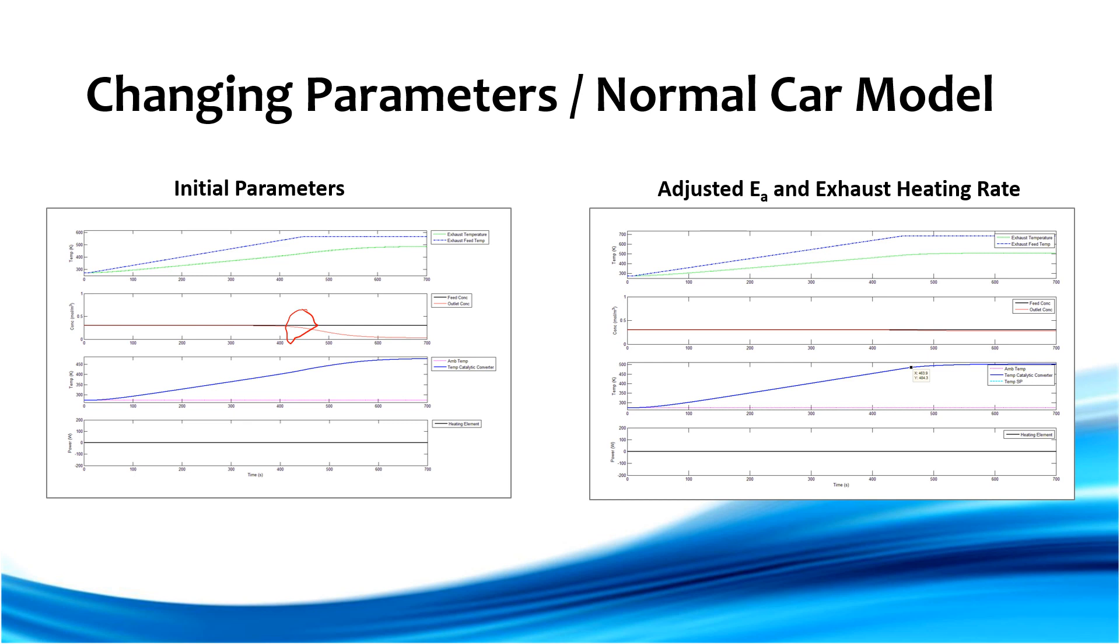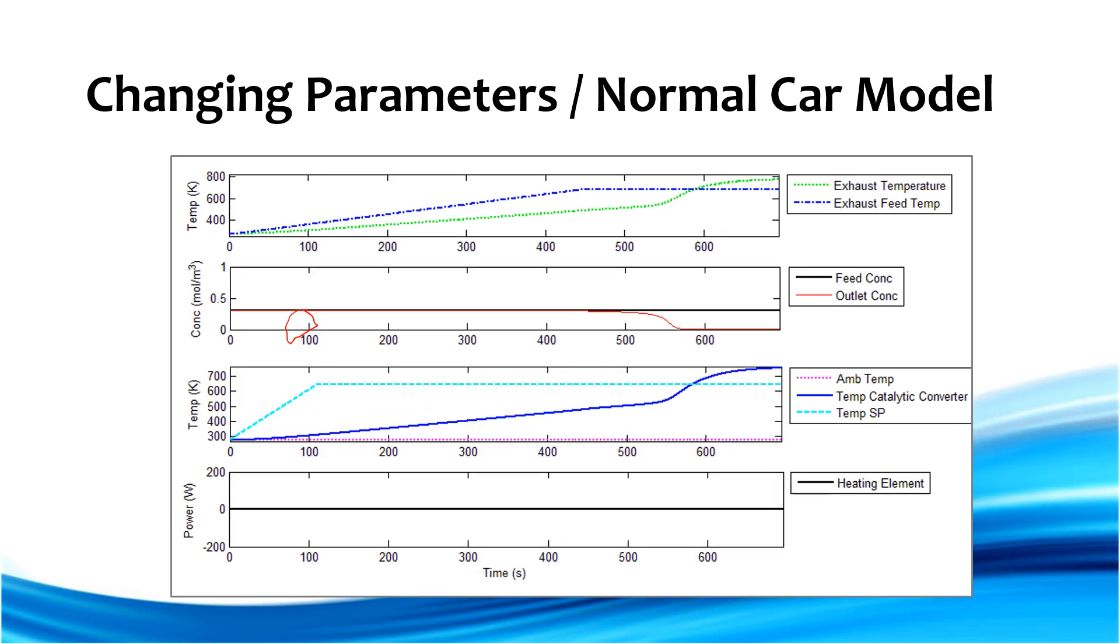And that there was not a fast enough heat transfer rate from the exhaust to the catalytic converter. So we increased those two parameters and were able to come up with this plot here. And this again shows that we are reaching a light-off temperature around seven and a half minutes. And that light-off temperature is about 484 Kelvin. And in this plot you can see that the reaction does take off and increase the temperature of our catalytic converter.